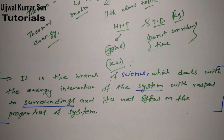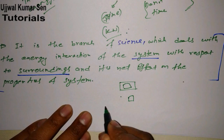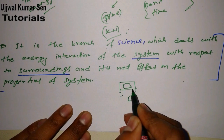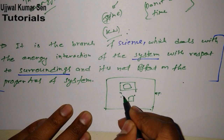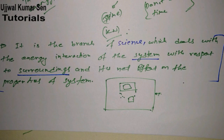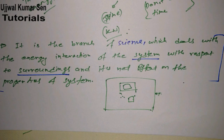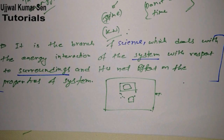Suppose you are sitting here watching this video on a desktop. The system is between you and this desktop. The room is quite large, so there is an imaginary boundary between you and the device on which you are watching. Other than the boundary — just after the boundary — we have the surroundings.